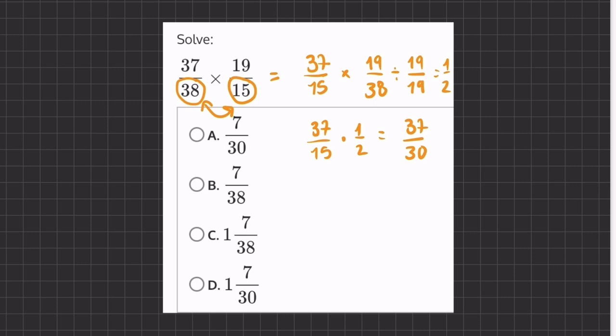we'll ask ourselves, how many times does 30 go into 37? That is once. And we have 7 left over out of 30. So, 1 and 7 over 30 will be our final answer. And that corresponds to answer D.